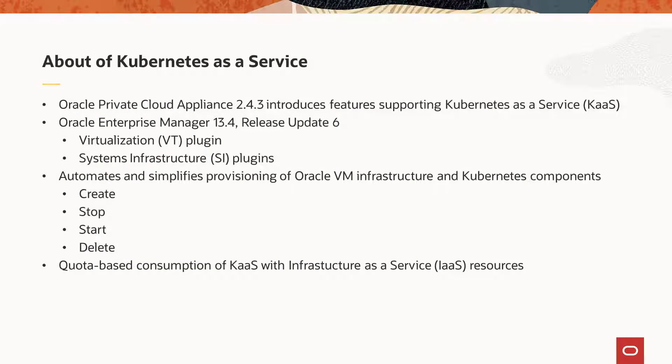Oracle Private Cloud Appliance version 2.4.3 introduces new features supporting Kubernetes as a service. The Kubernetes features described in this and related presentations are implemented through Oracle Enterprise Manager 13c release 13.4 with release update 6. In addition to the base Oracle Enterprise Manager installation, the Virtualization or VT and Systems Infrastructure or SI plugins are required.